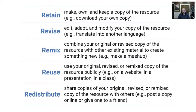Reuse is the fourth R. By reuse we mean that you can take either the original copy that you've downloaded, or your revised copy, or a remixed copy, and use that resource publicly — post it on a public website, include it in a public presentation, things like that. And then the final R is redistribute. Redistribute means you can take either that original copy, or your revised or remixed copy, and make more copies and give them away to other people to download and keep themselves, by posting it online, for example. So these are the five Rs.